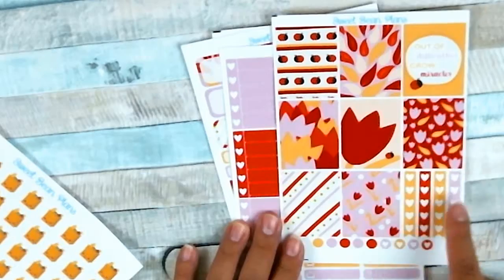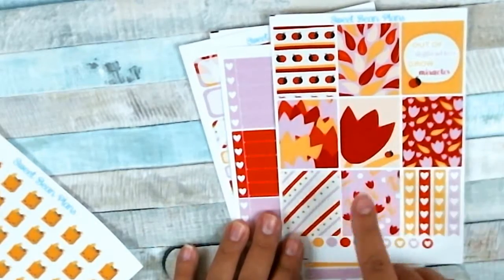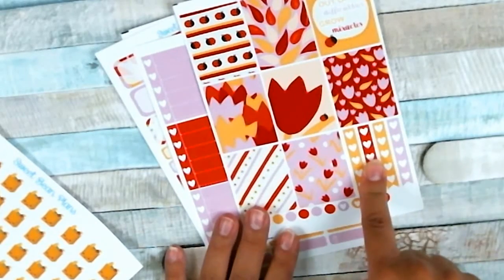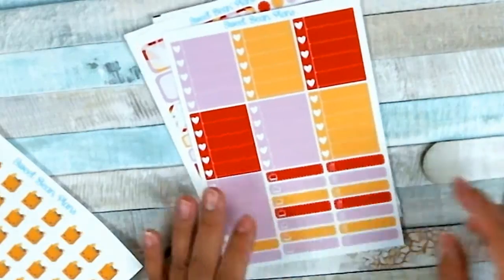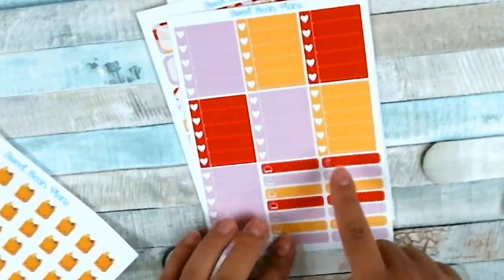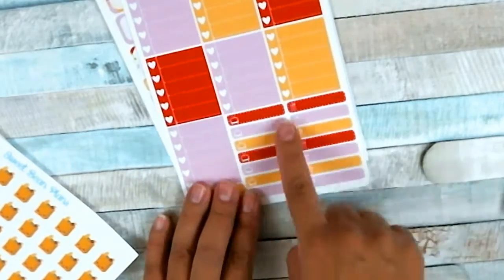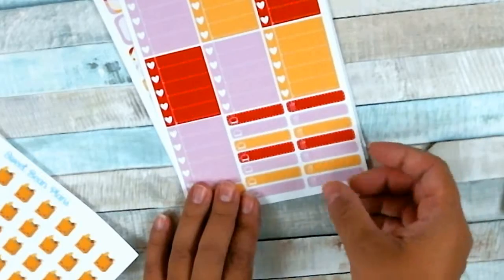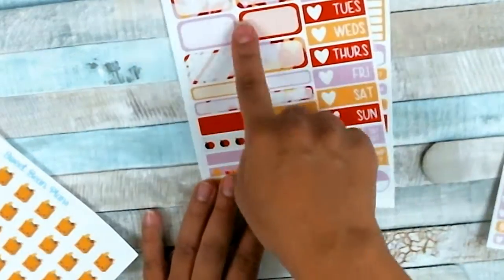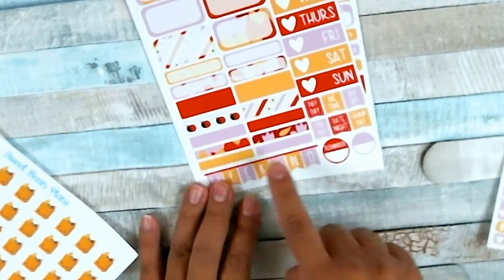These are the full boxes—one, two, three, four, five, six, seven, eight. Eight full boxes and some checklist hearts, some little circles. This is a full box checklist heart, some quarter boxes, TV and dinner icons. Some half boxes, quarter boxes, weekend banners, some headers.